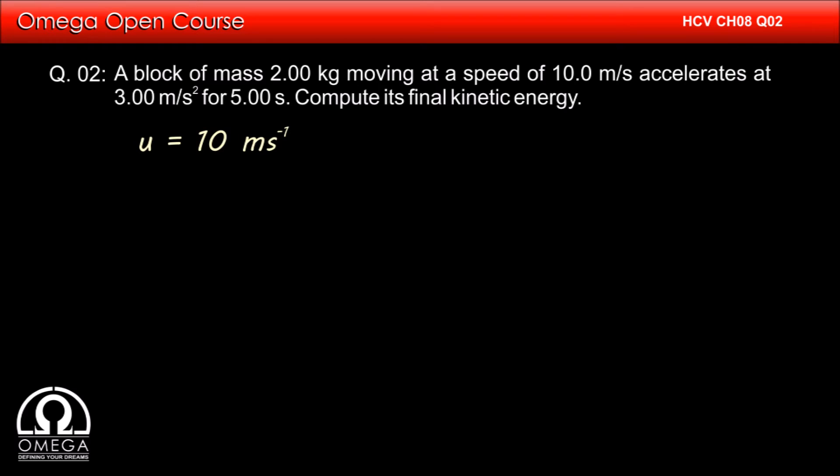Initial speed u equals 10 m per second. Acceleration a equals 3 m per second squared. From Newton's equation of motion we have v equals u plus at. Putting the values, we get v equals 10 plus 3 times 5, that is 25 m per second.